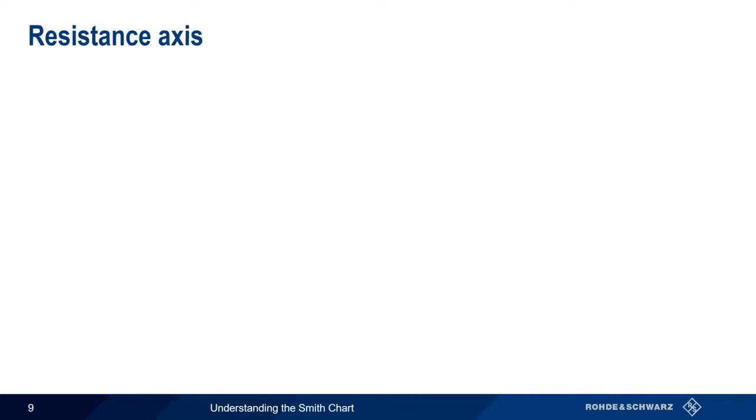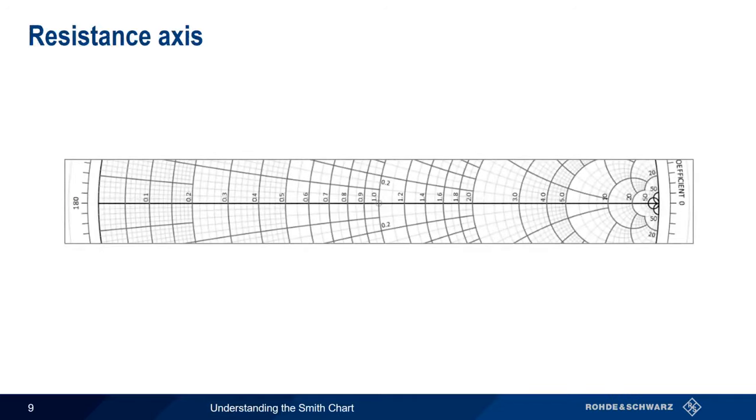Let's take a closer look at the resistance axis, the only straight line on the Smith Chart. Remember that our normalized, purely resistive source impedance is represented by the one in the center, and corresponds to a VSWR of 1. Moving to the left, resistance decreases until it reaches the edge of the circle, where resistance equals zero, in other words, a short circuit.